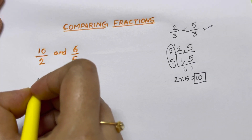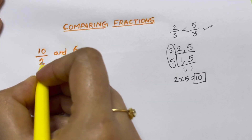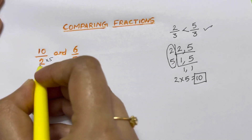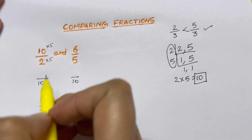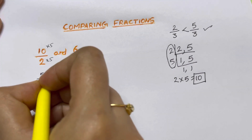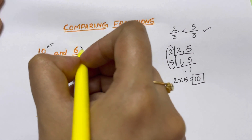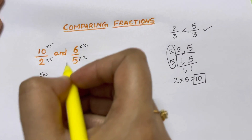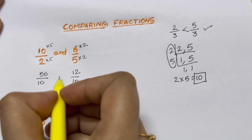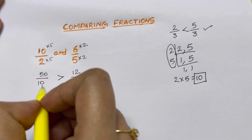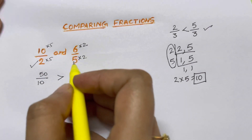Now we're going to make the denominators equal — both become 10. To make 2 into 10, you multiply by 5, so you multiply the numerator by 5 as well: 5 times 10 is 50. And here, 5 is multiplied by 2 to make the denominator 10, so you multiply the numerator by 2 as well: 6 times 2 is 12. Now you can compare: 50 is greater than 12, so 50 over 10 is greater than 12 over 10 — meaning 10 over 2 is greater than 6 over 5.